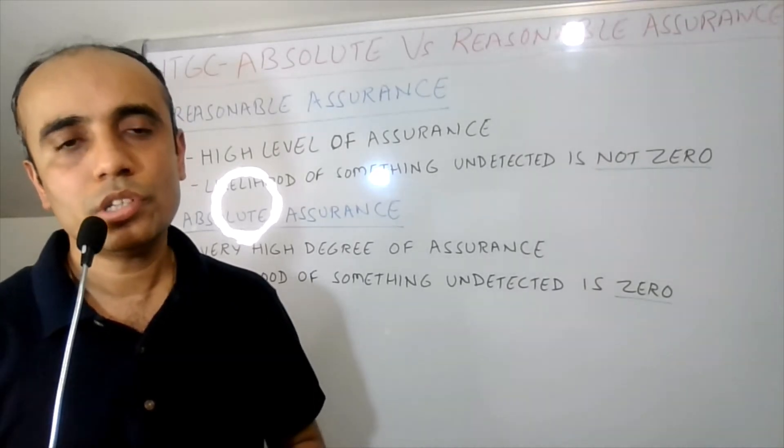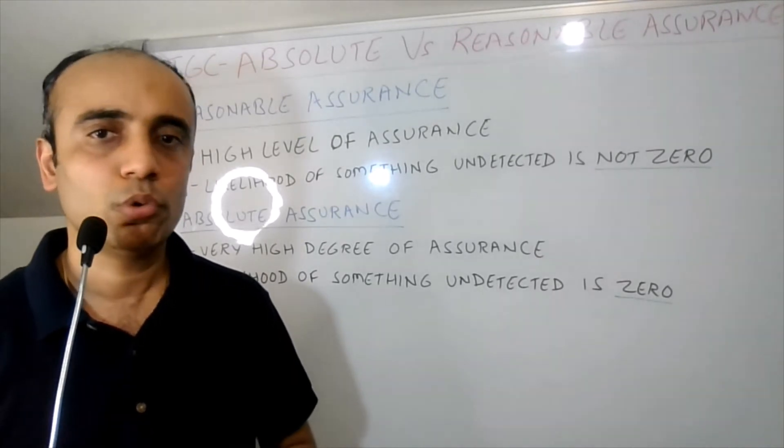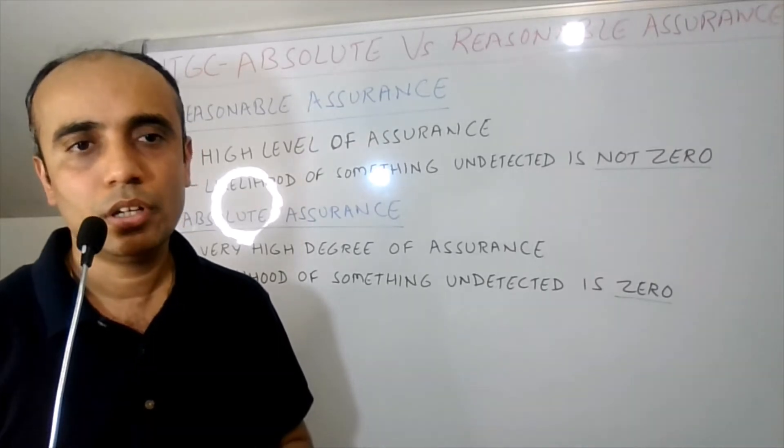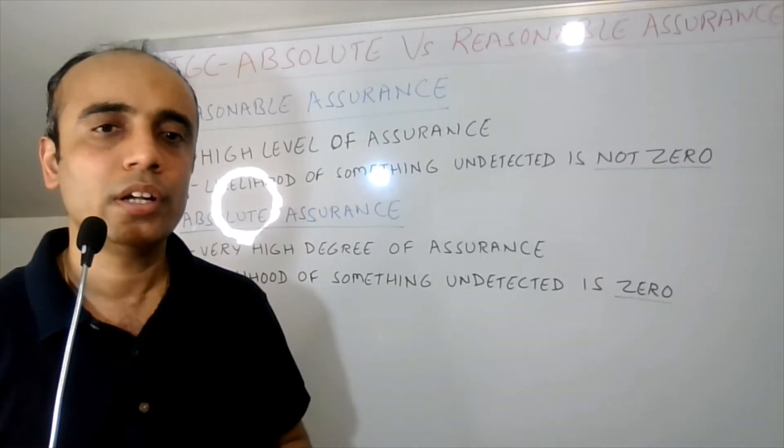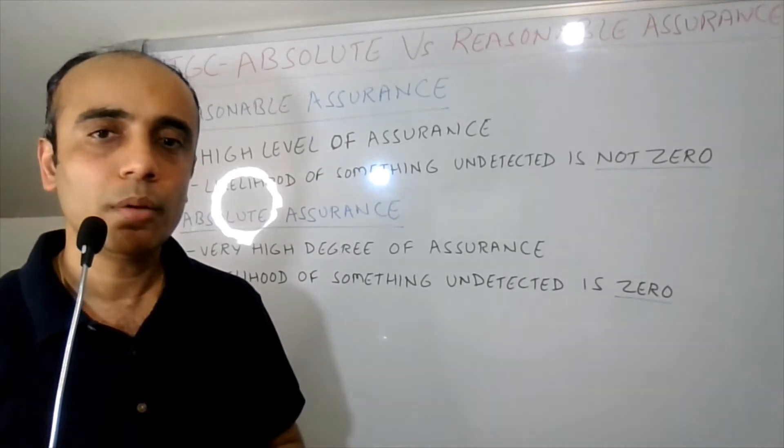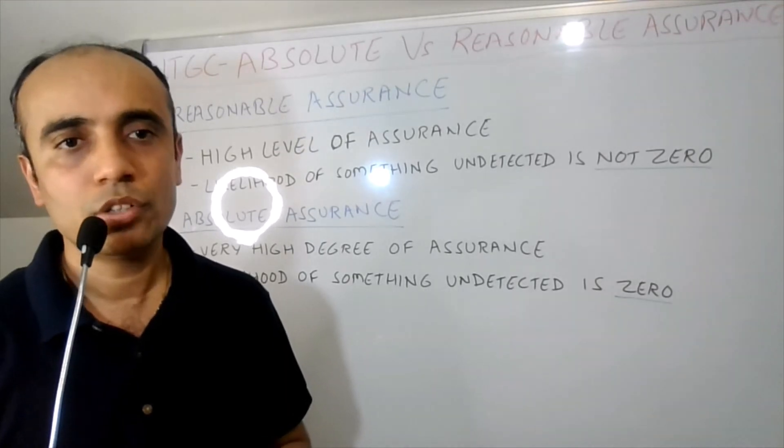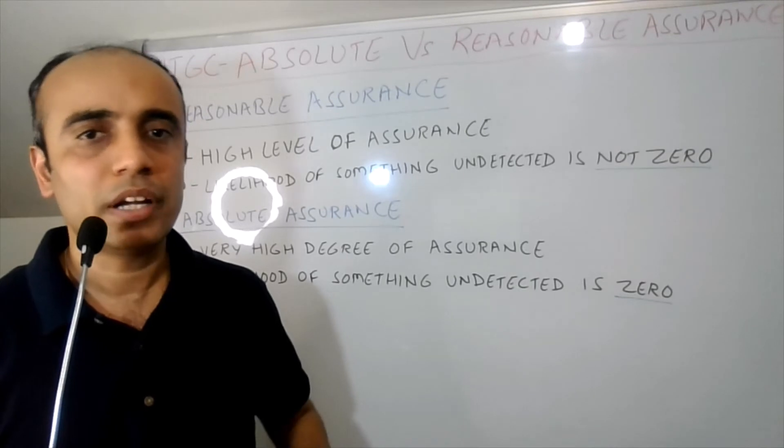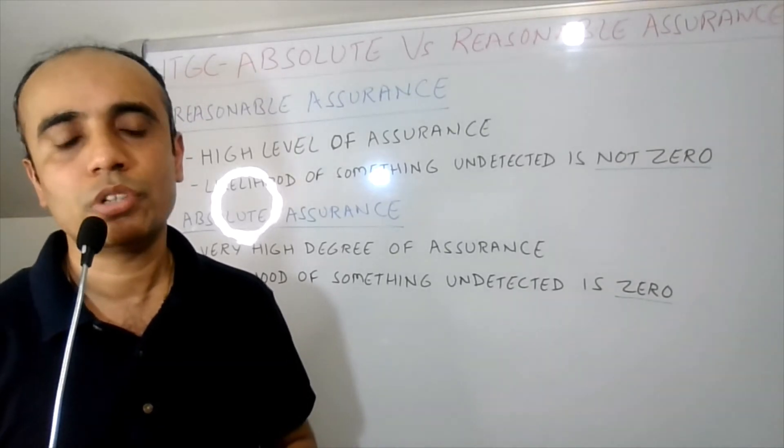As we all know, risk auditor compliance assessments mostly follow a sampling approach and do not cover 100% of the landscape. So the intent of these assessments is to only provide reasonable assurance. Though the risk of something big being incorrect and not getting detected is extremely low, reasonable assurance doesn't mean that something big is being left out. It's just about not covering 100% of the landscape. That's the reason we use the word reasonable assurance.